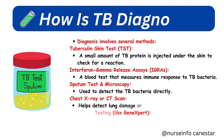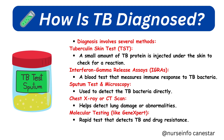How is TB diagnosed? Diagnosis involves several methods: 1. Tuberculin skin test (TST) — a small amount of TB protein is injected under the skin to check for a reaction. 2. Interferon gamma release assays (IGRAs) — a blood test that measures immune response to TB bacteria. 3. Sputum test and microscopy — used to detect the TB bacteria directly. 4. Chest X-ray or CT scan — helps detect lung damage or abnormalities. 5. Molecular testing, like GeneXpert — a rapid test that detects TB and drug resistance.